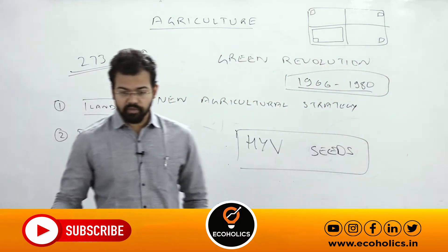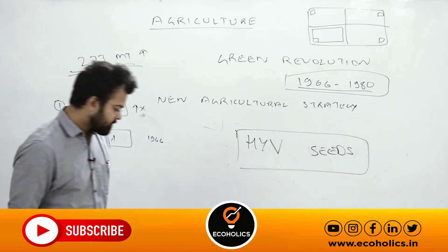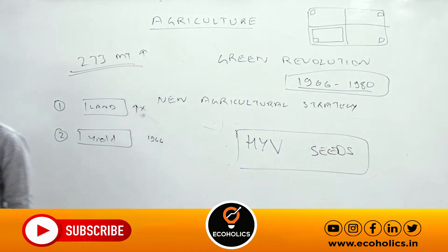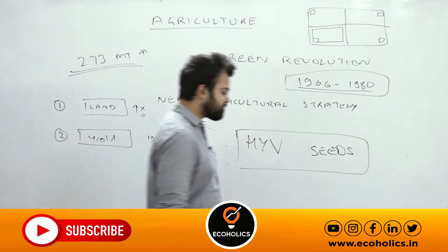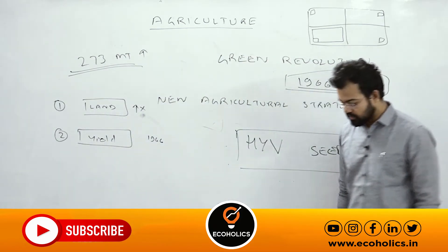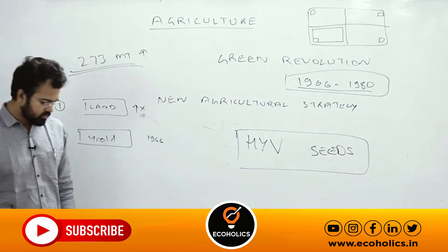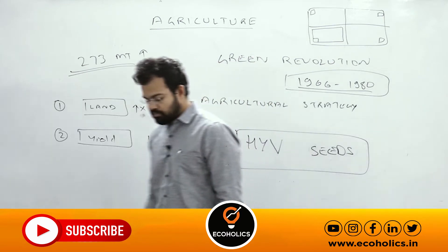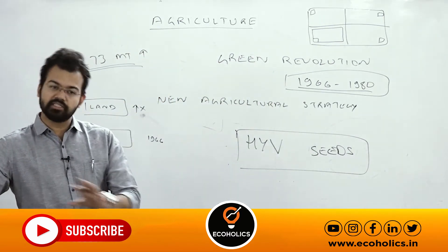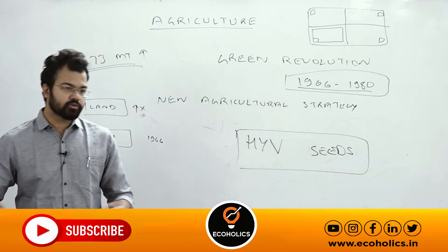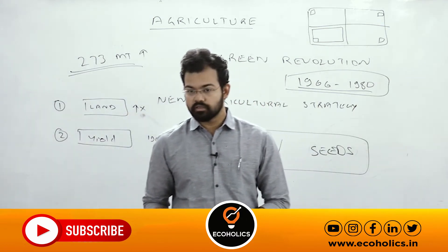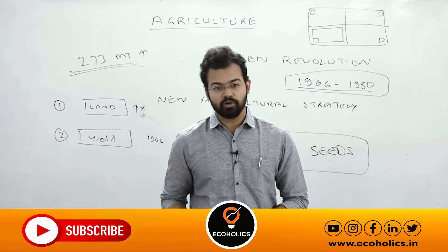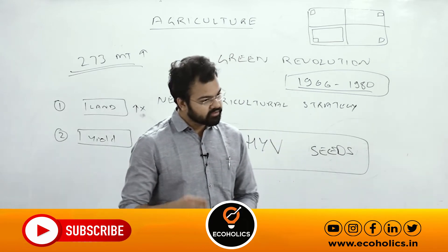Second most important challenge is lower productivity — in front of policymakers. GS Paper 3 on economics is essentially equivalent to agriculture in UPSC, because UPSC generally asks questions where the government does not have any solution. Even big economists of India do not have solutions for the agriculture sector, which is why agricultural questions are frequently asked.